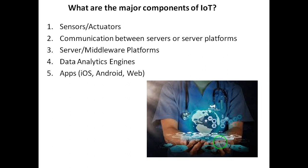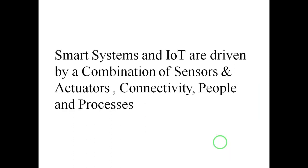With this introduction, we will discuss about what are the major components that should be considered in an IoT. The very basic essential things are sensors and actuators connected to single board systems, and the communication between the end devices and the servers, server and middleware platforms, followed by the data analytics engine, and most importantly the web or mobile applications to make use of the existing infrastructure.